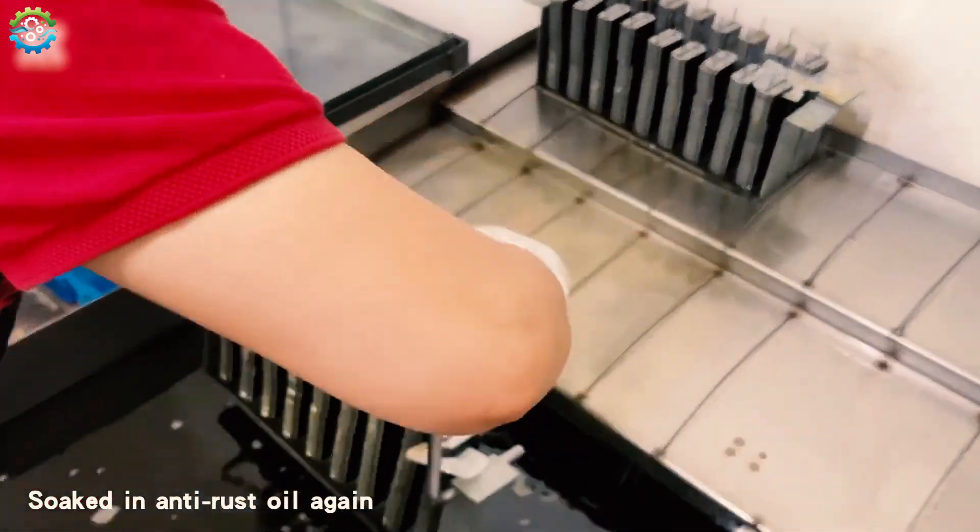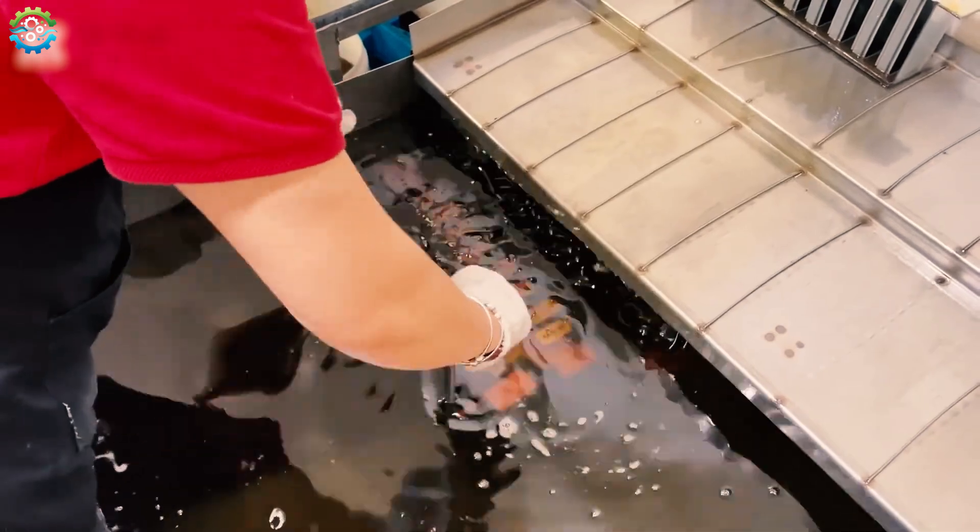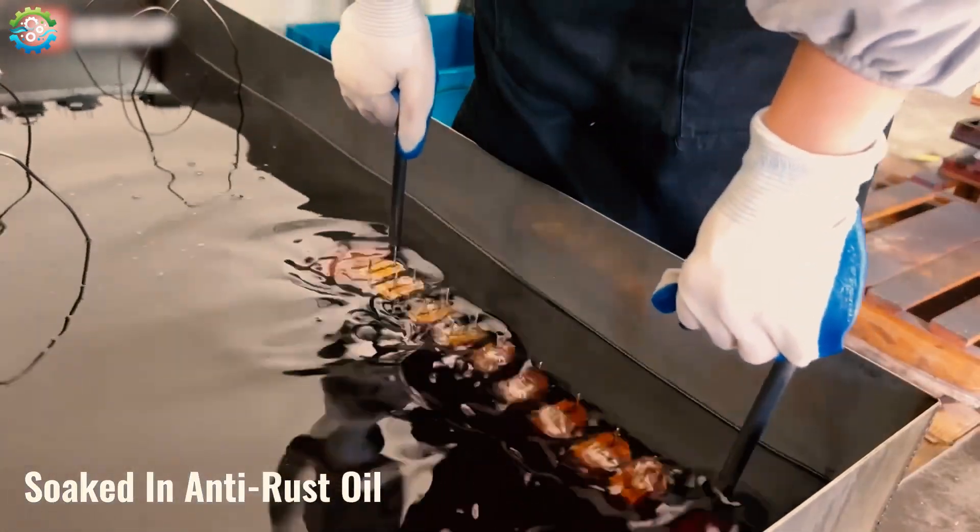In the next process, the blades are submerged in anti-rust oil for roughly half an hour. This provides additional protection against corrosion.